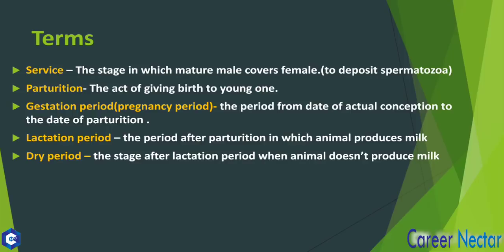The period after parturition in which the animal produces milk is the lactation period. After the lactation stage, when the animal doesn't produce milk, that stage is called the dry period. So to recap: parturition is the act of giving birth to young ones; gestation period is the pregnancy period from conception to the date of parturition; and we also have lactation period and dry period.